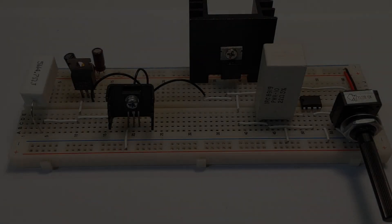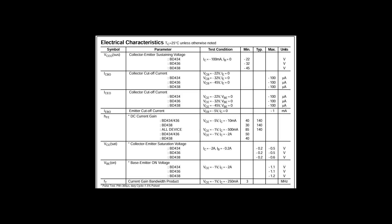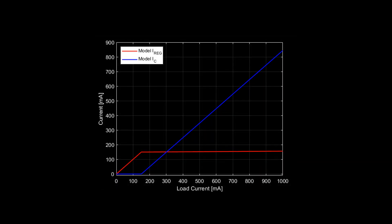Before looking at the result, we need to look at what we should be expecting. Let's consider the typical beta value for this transistor, which is 140, and plot the equation we've seen at the beginning.